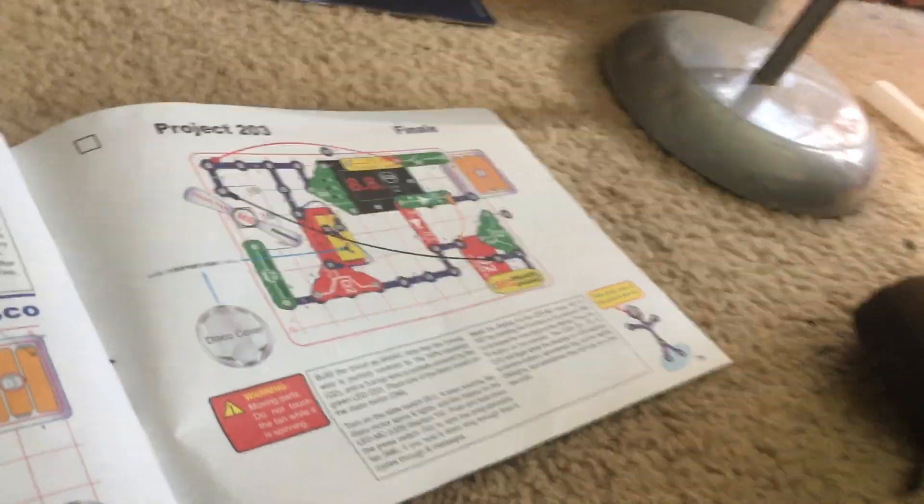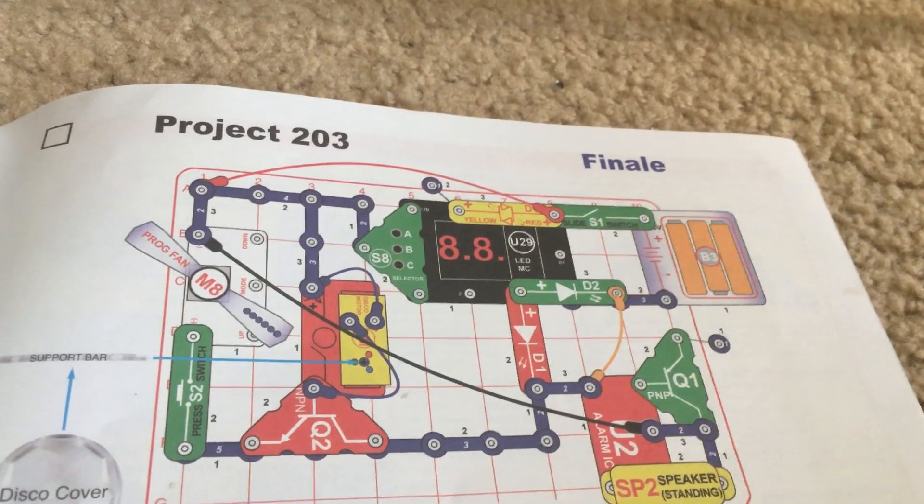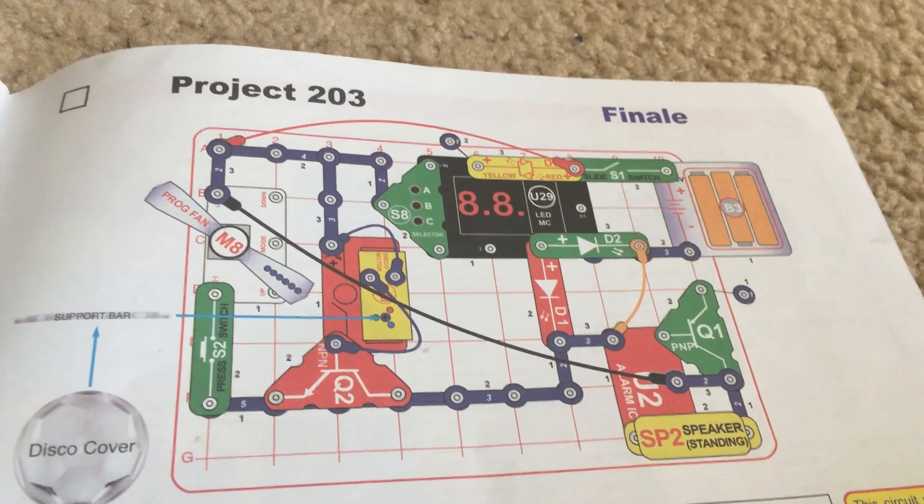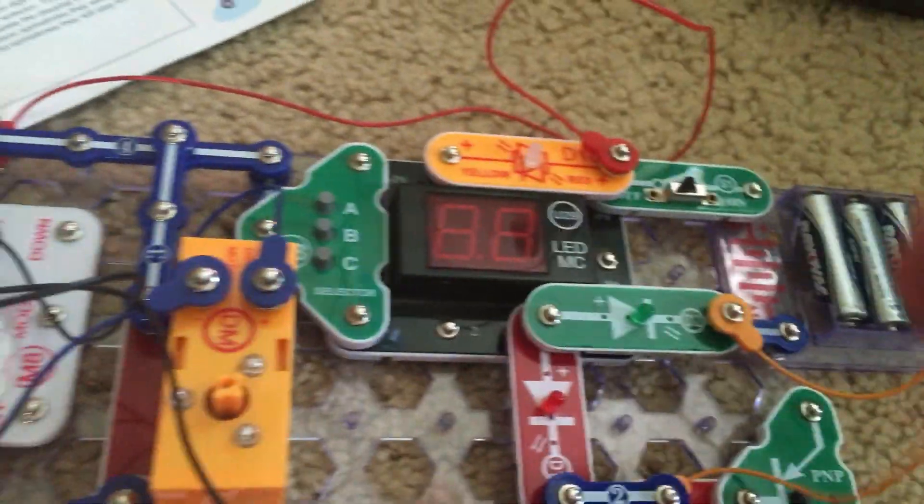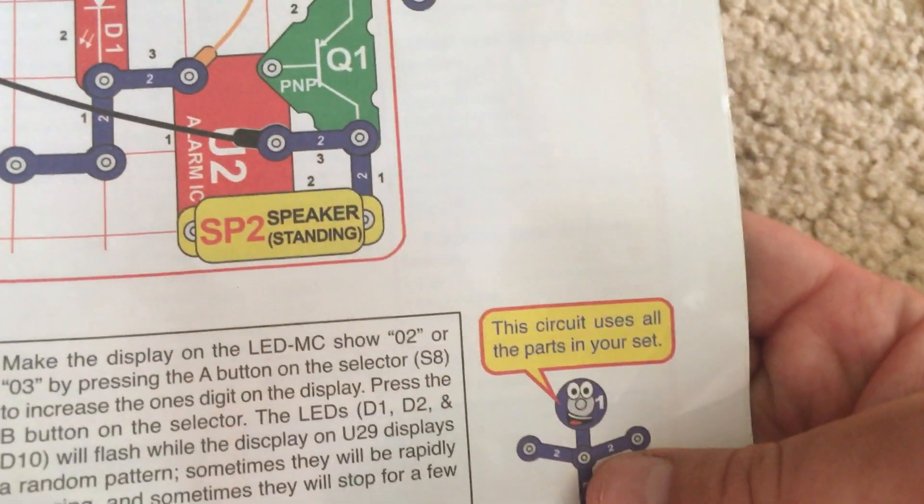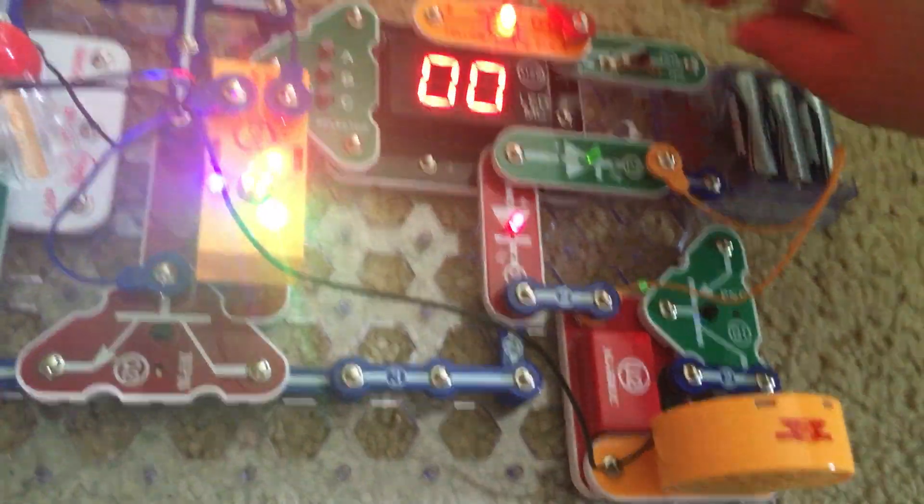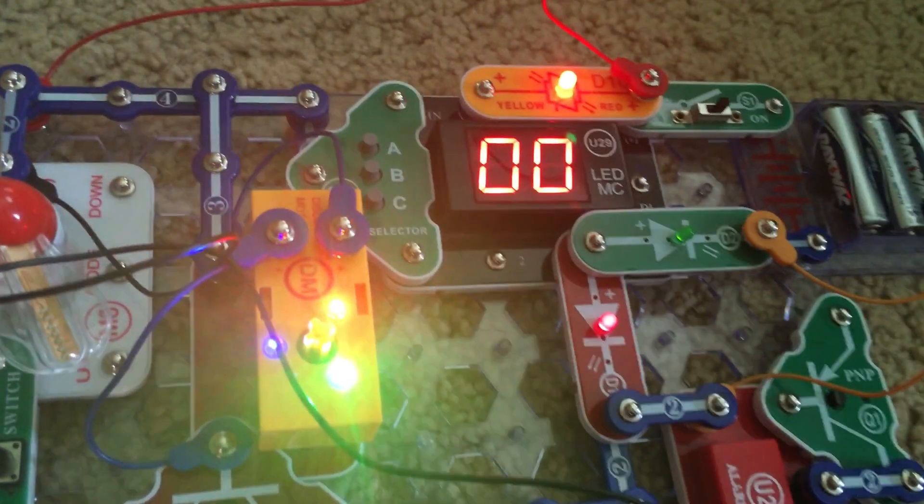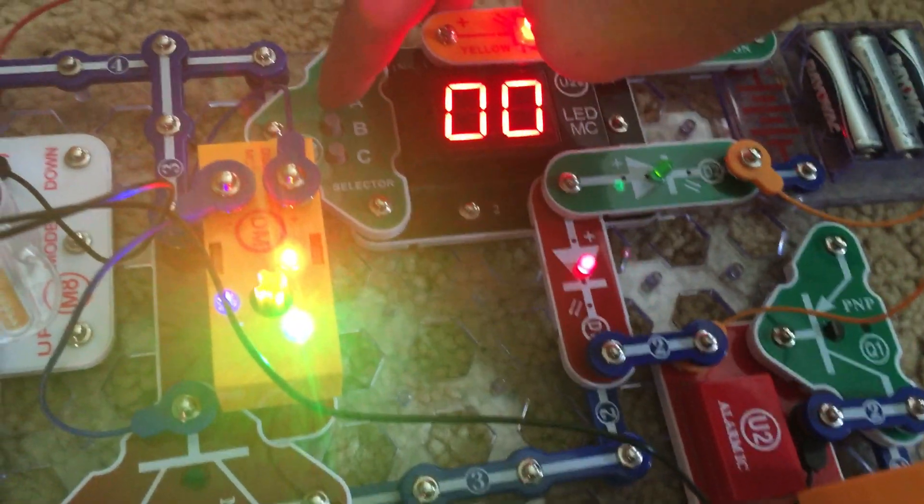I've been waiting for a while, a long time for this, and it is finally here. Project 203, the last project in this Snap Circuit set, is the finale. This project is relatively simple to operate, as complicated as it looks. And what's interesting is that it includes all of the parts in this set. We will turn on the slide switch and some of the components will start up.